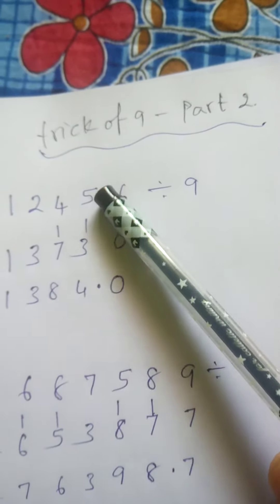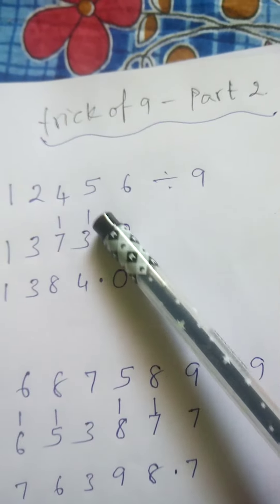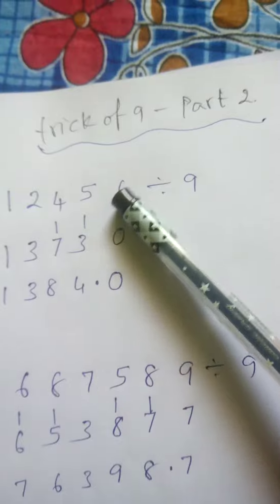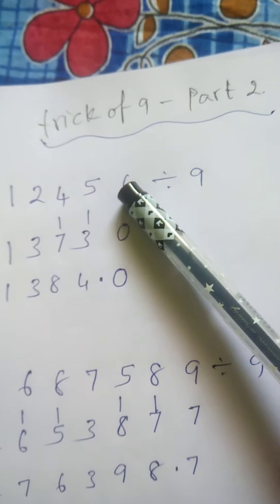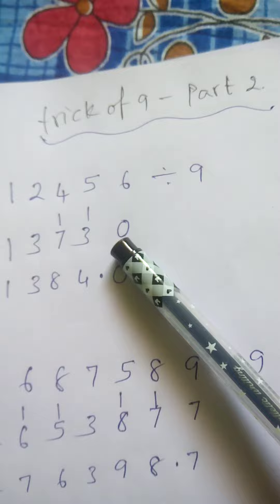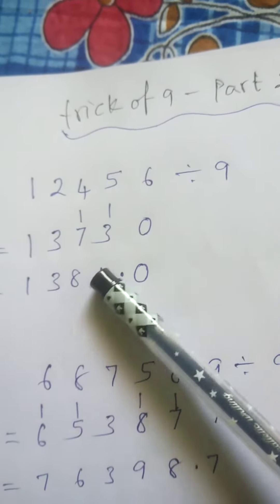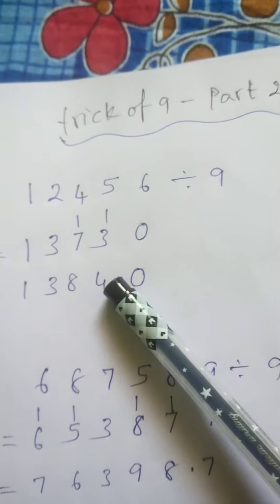Like 7 plus 5 is 12, so 12 minus 9 is 3, carry 1. Again, 3 plus 6 is 9. If you get 9, subtract 9, it becomes 0, carry 1. The answer is 1 3 8 4 0, and put a point.